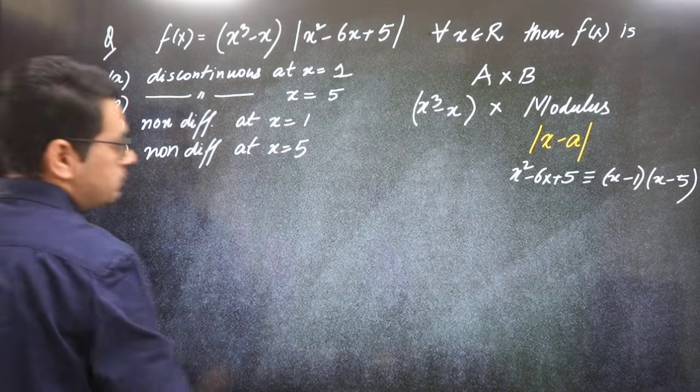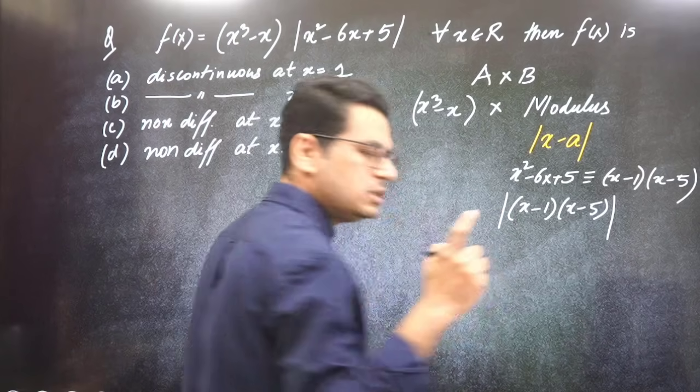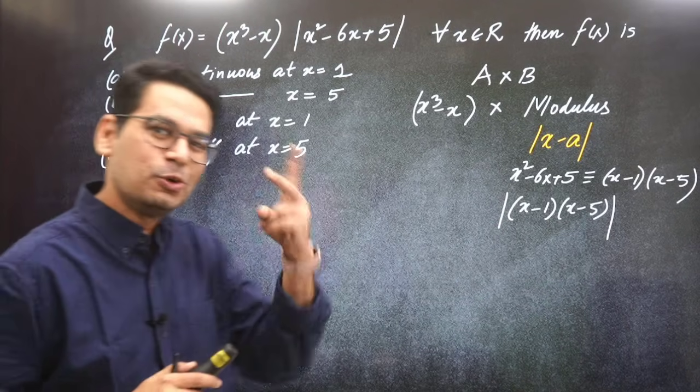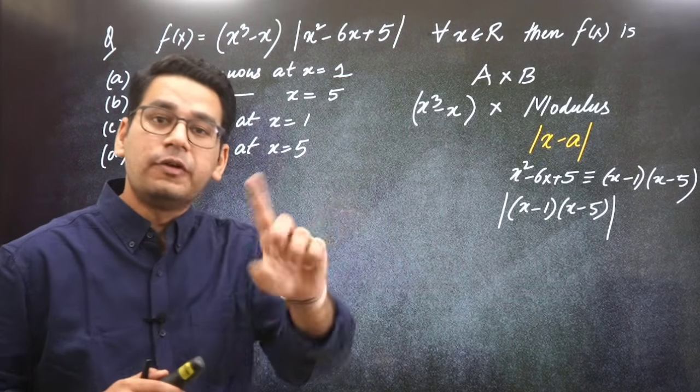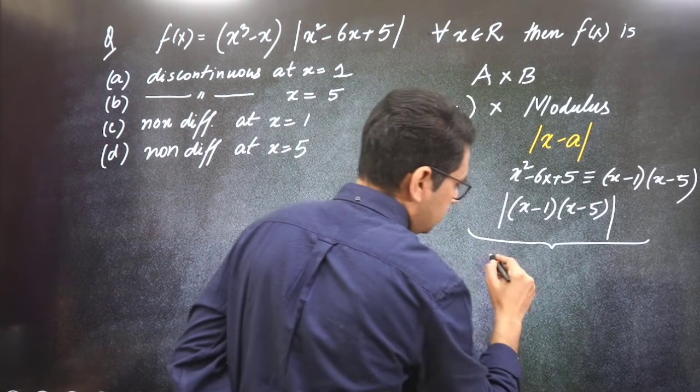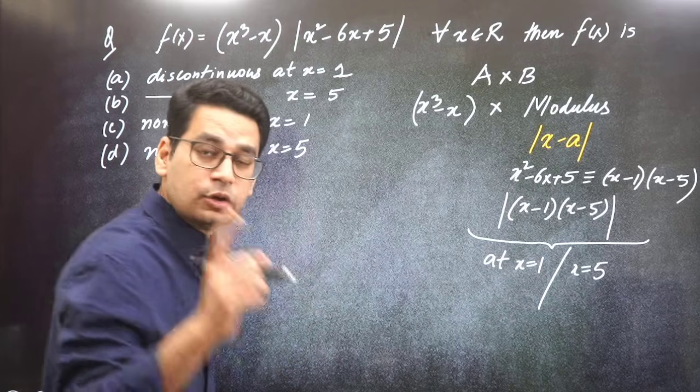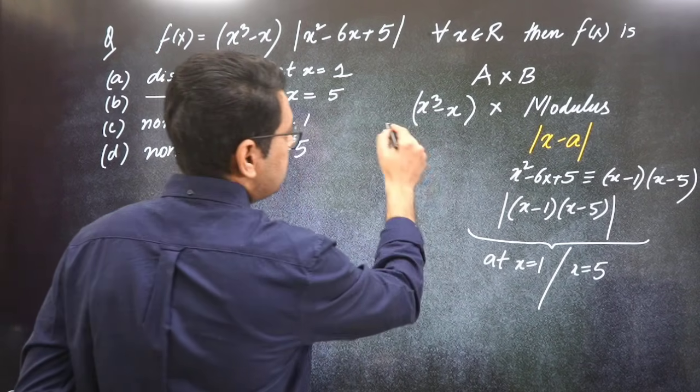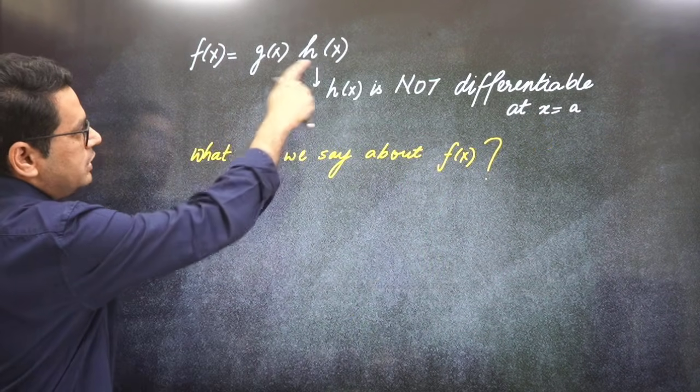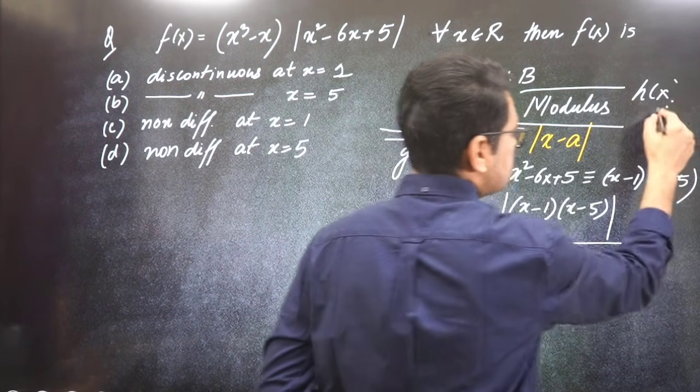So now we understand that modulus of (x-1)(x-5) - there are two points at which non-differentiability might occur. That's why there were two options. Both points were given in the options. Let me tell you the fundamental. What is the fundamental? Listen carefully. You have to check at x equals 1 and at x equals 5. This modulus function becomes h(x).